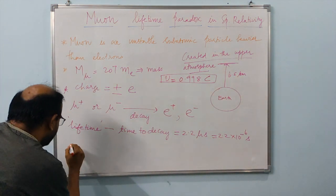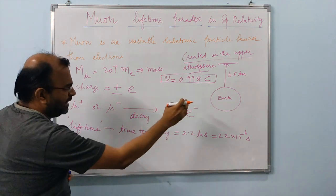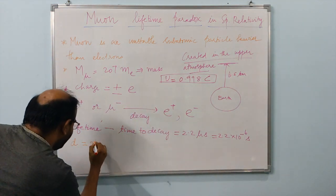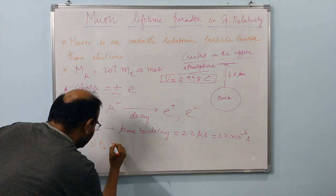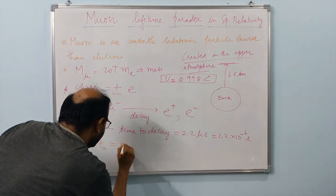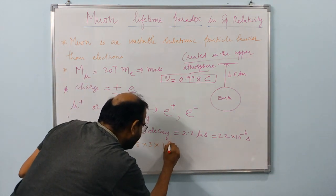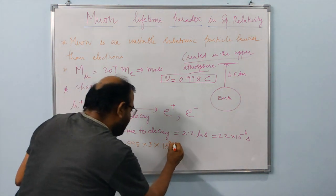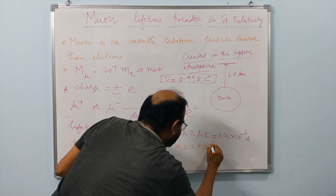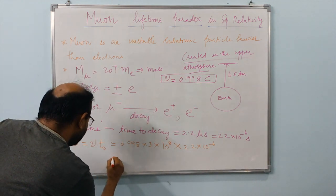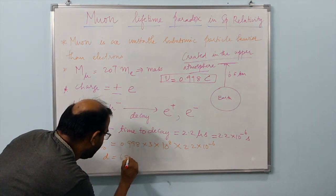The distance d equals velocity multiplied by the lifetime t₀. So d = 0.998 × (3 × 10⁸ m/s) × (2.2 × 10⁻⁶ s). If you work this out, you find the distance to be about 658 meters.